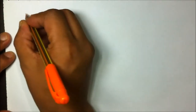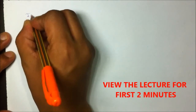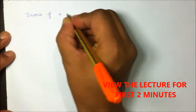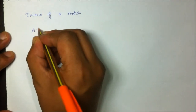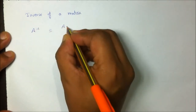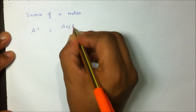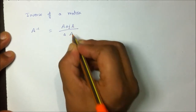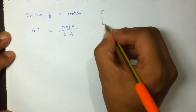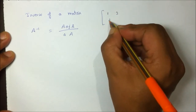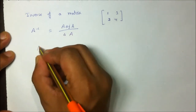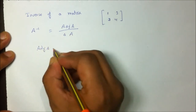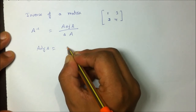In today's lecture we will be finding out the inverse of a matrix. For those who don't know what an inverse looks like: inverse of a matrix is denoted by A inverse, which is adjoint of A divided by determinant of A. The adjoint of A is the transpose of cofactors of A.